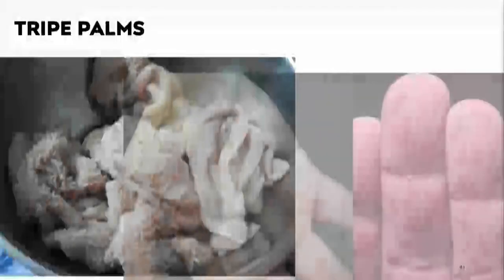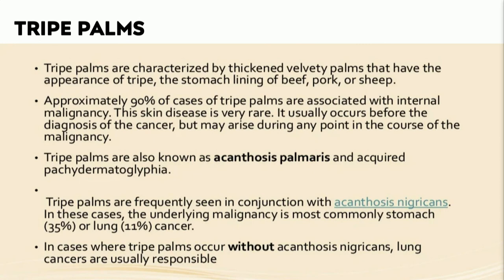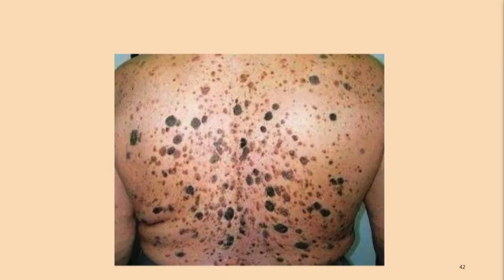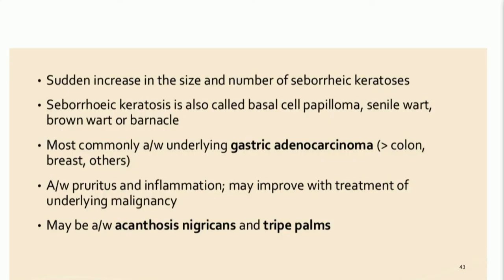Tripe palms are characterized by velvety palms resembling tripe, sometimes seen in combination with acanthosis nigricans. About 90% of the time they are associated with an underlying internal malignancy, most commonly gastrointestinal or pulmonary carcinoma. When tripe palms occur without acanthosis nigricans, the most likely malignancy to find is lung cancer. A sudden onset of seborrheic keratoses raises concern for the sign of Leser-Trélat, associated with underlying gastrointestinal carcinomas and potentially combined with acanthosis nigricans and tripe palms.